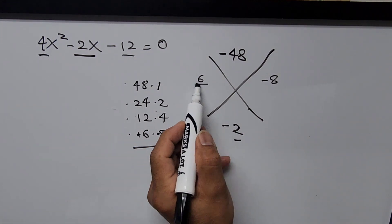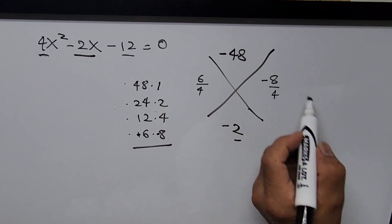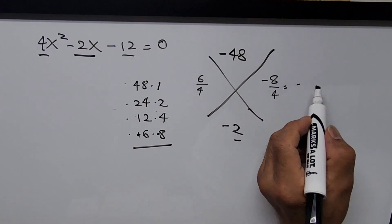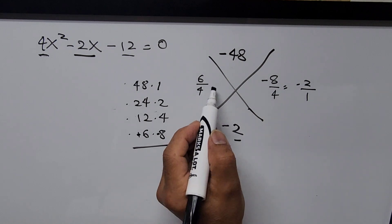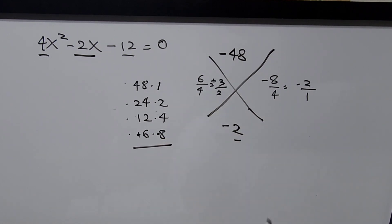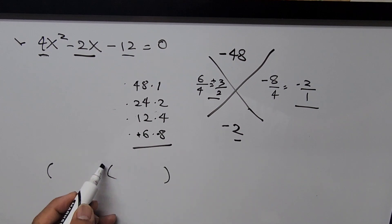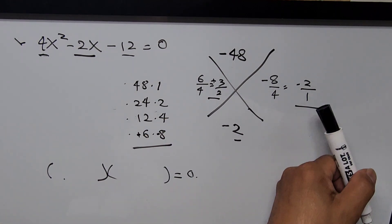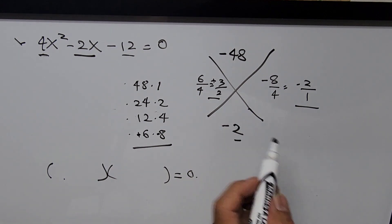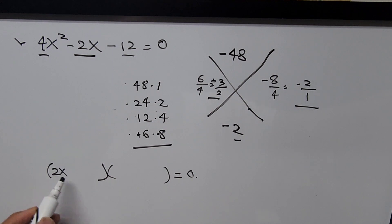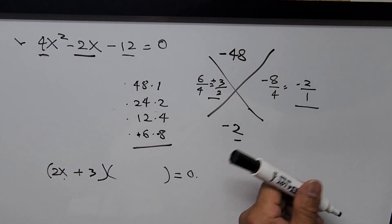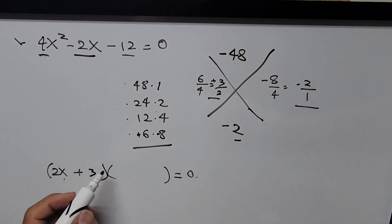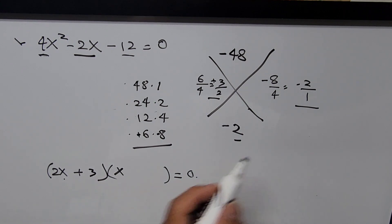Since the leading coefficient is 4, we divide the factors by 4: negative 8 over 4 gives negative 2 over 1, and positive 6 over 4 gives positive 3/2. We form two parenthetical factors equated to zero. The factor with 3/2 gives denominator 2 as the coefficient of x: that is 2x plus 3. The factor with negative 2 over 1 gives coefficient 1: that is x minus 2.